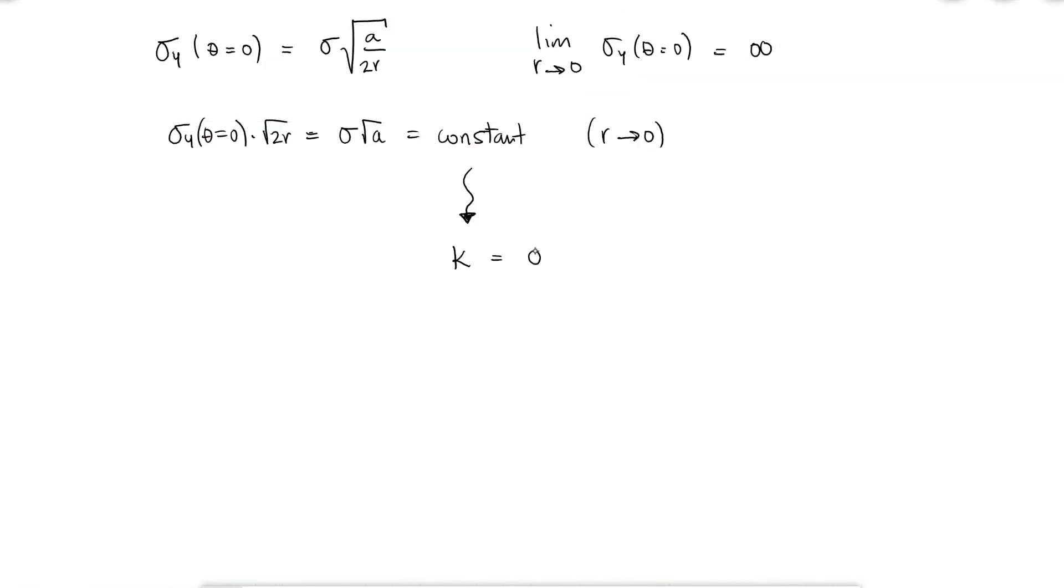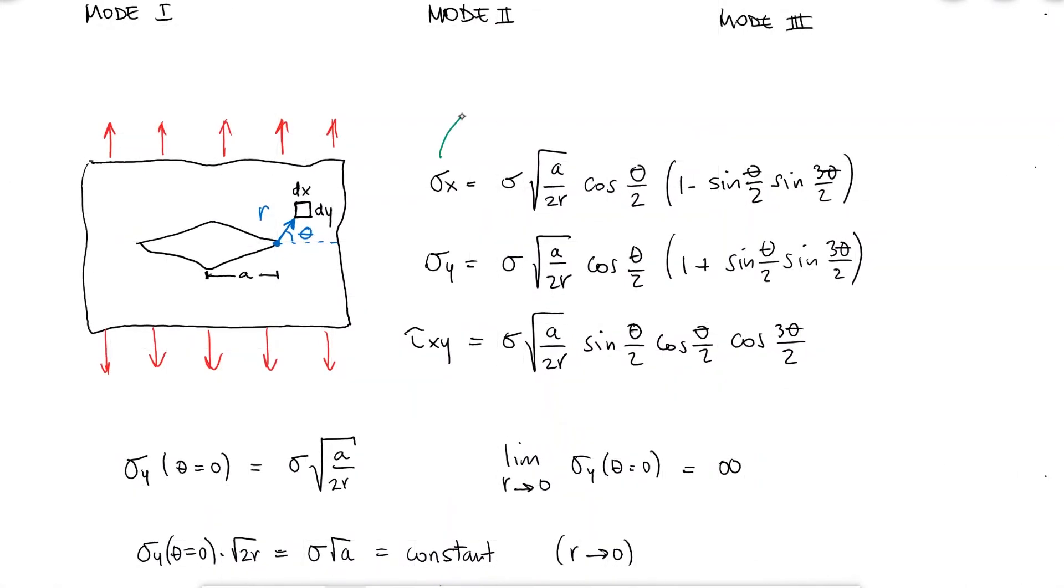Because of this, we call this constant the stress intensity factor. And the reason we add a pi inside the square root is so that when I write my stress equations in terms of the stress intensity factor, I find a square root of the circumference in the denominator.